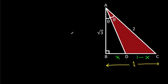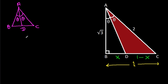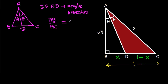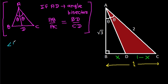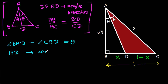Now, in triangle ABC, if AD is the angle bisector, then AB over AC equals BD over CD. Since angle BAD equals angle CAD (both equal theta), that means AD is the angle bisector.